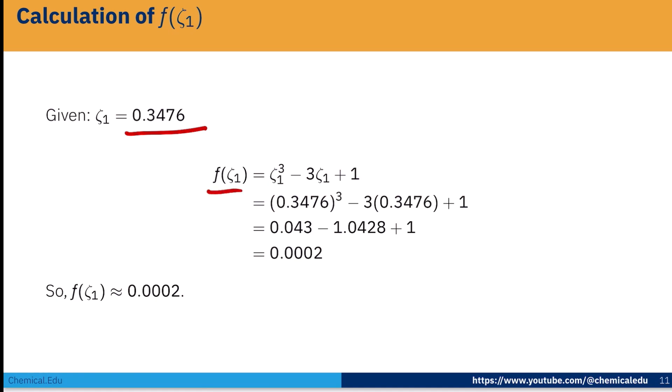If I put this value, ultimately we will get 0.002. So if we take that as root, f(ζ_1) = 0.002. Now we can take that as the root of the equation. If this is the condition, root of the equation is 0.3476.